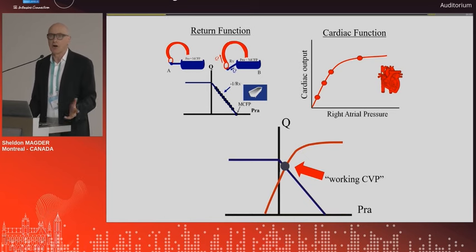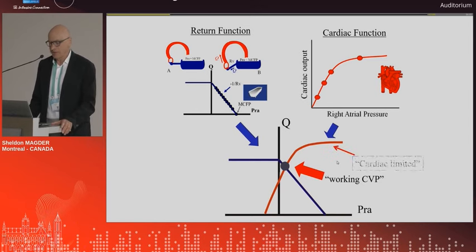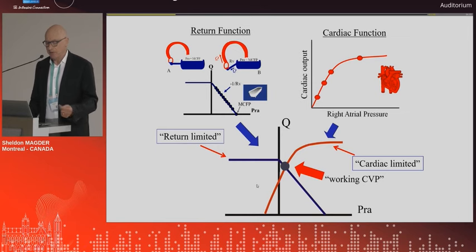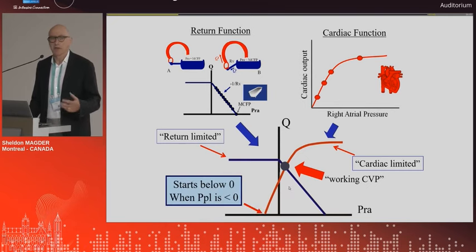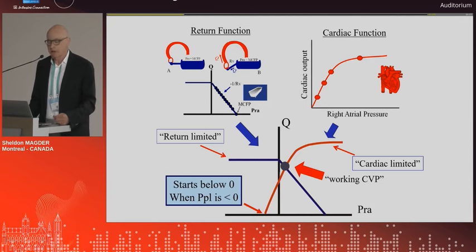That was the return function. You are all very aware of the cardiac function — the Starling relationship — and they share the same axes. So we can put them together and we have the working central venous pressure, the working cardiac output, and the working venous return. It's the interaction of these two functions that determines what comes out of the heart. There are two very important limits: a limit to how much comes back — the plateau — and a limit on the cardiac function side. Importantly, as we breathe spontaneously, the function curve starts at a negative value. Inside the thorax at end-expiration at FRC, the balance of forces means the pressure around the heart is a negative number — below atmosphere, not below zero.